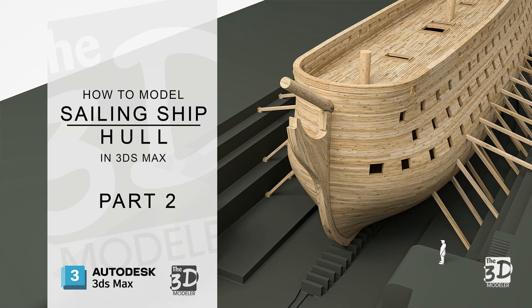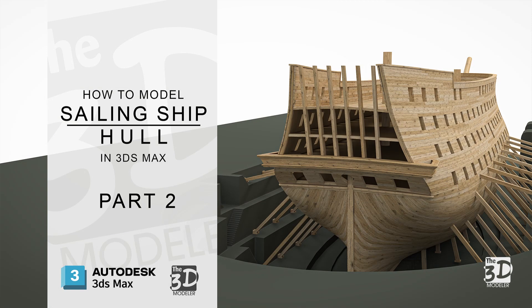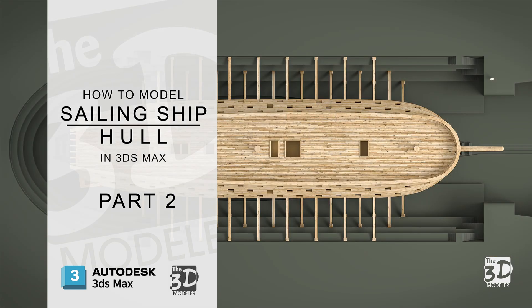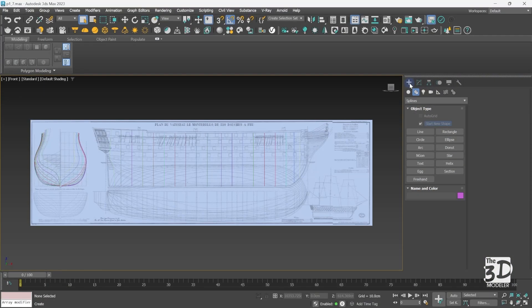Hey everyone and welcome back to part 2 of how to model a sailing ship hull using ship planes in 3ds Max. In part 2 we will start by connecting all the lines of the body plane to form the main section of the ship hull frame.